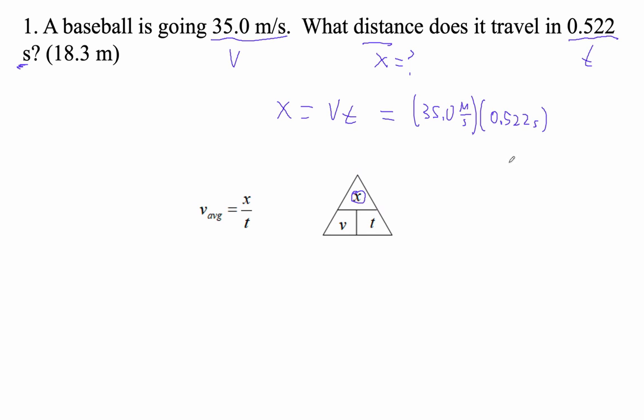So 35 times 0.522 is 18.27. So x is equal to 18.27 meters, which is about 18.3 meters. Ta-da!